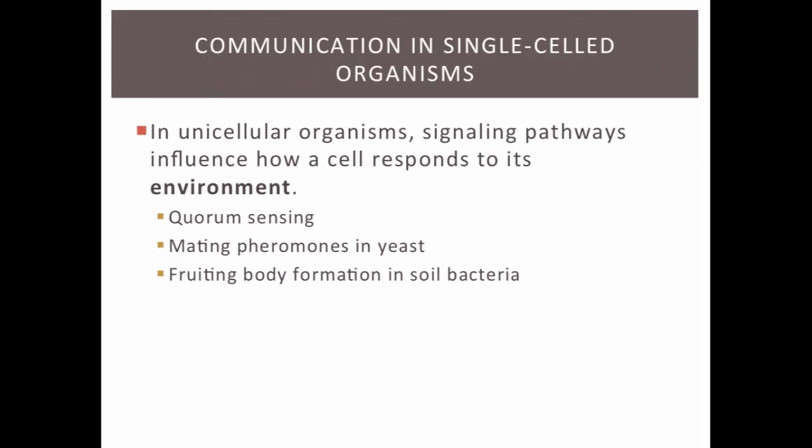Now let's look at communication in single-celled organisms. In unicellular organisms, signaling pathways influence how a cell responds to its environment. Because single-celled organisms are only one cell, they don't need to communicate between cells as much as multicellular organisms do. Single-celled organisms mostly respond to environmental signals. We'll discuss three types of communication: quorum sensing, mating pheromones in yeast, and fruiting body formation in soil bacteria.